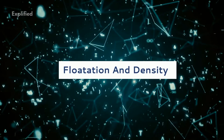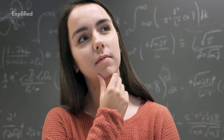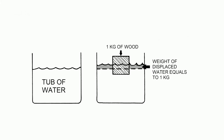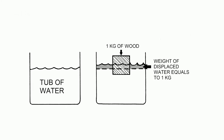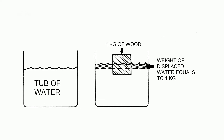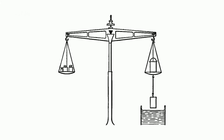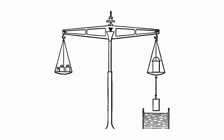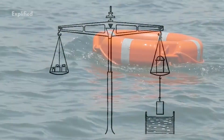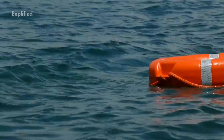Now let's study the phenomena of floatation and density. Density plays a substantial role in Archimedes principle. The average density of an object ultimately determines whether it floats or not. If its average density is less than that of the surrounding fluid, the object will float, because the fluid, having a higher density, contains more mass and thus more weight in the same volume, making the buoyant force greater than the weight of the object.